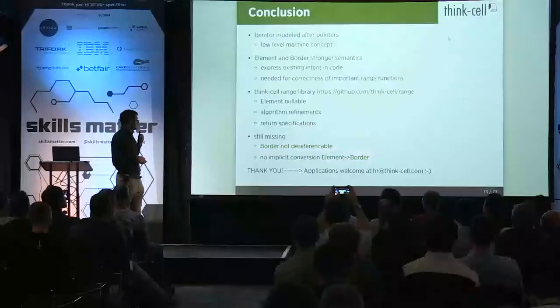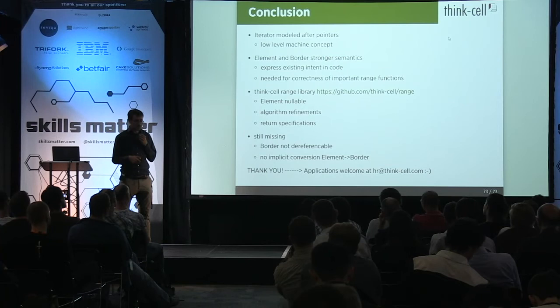The iterator was originally modeled after pointers — a very low-level concept — and I don't think it has good semantics. Elements and borders have much better semantics and you can express your intent much better, and they are indeed needed for the correctness of base(). We have parts of that implemented in our range library. Thank you very much for listening — applications are always welcome.